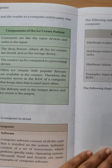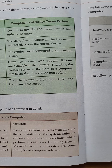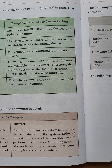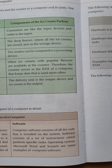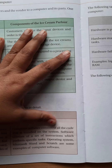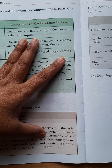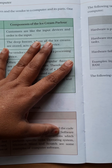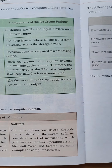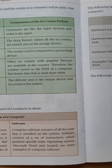Now we will see the software parts. Computer software consists of all the code that is installed on the system. We know binary language — 0 and 1 — whatever data or input we give through the keyboard is converted to 0 and 1, and it is installed on the system. Software consists of a set of instructions which perform specific tasks.